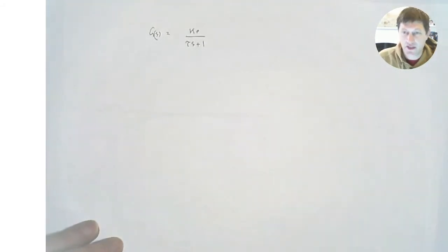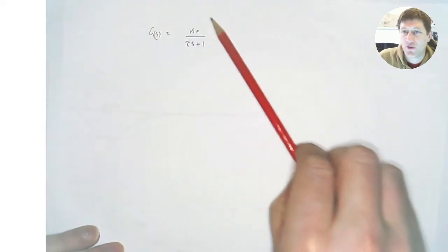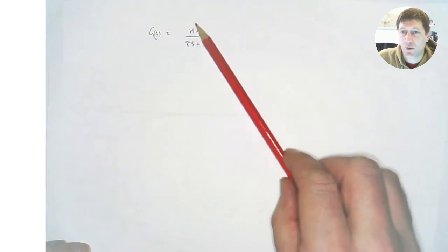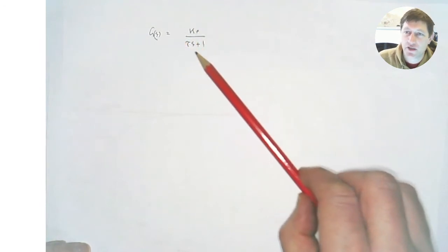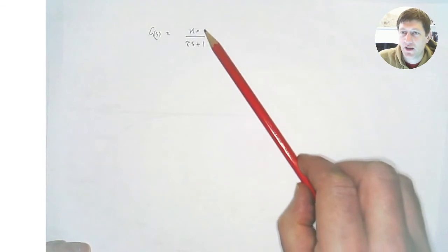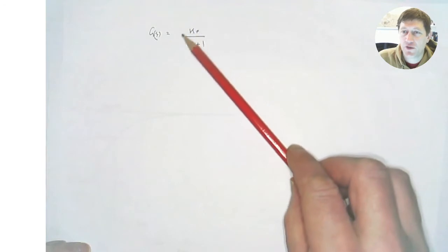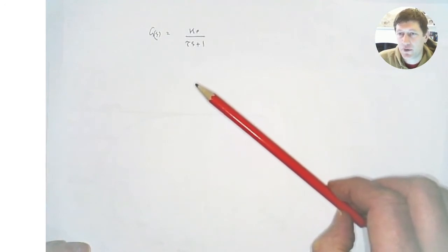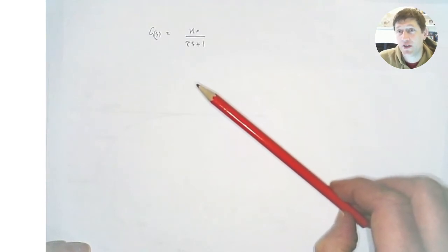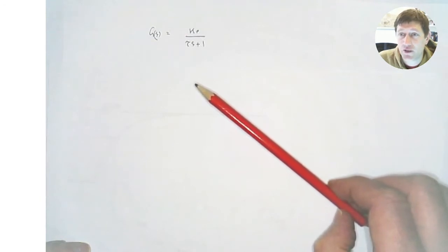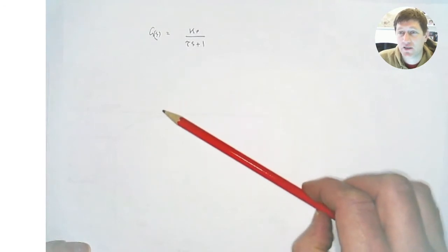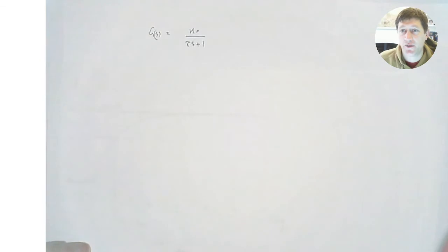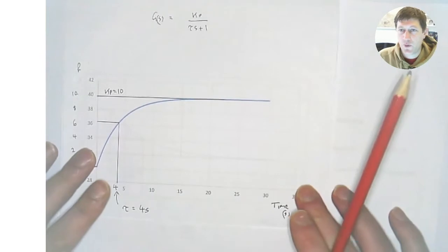We reviewed the technique of characterising a system with a general equation. Many first order systems can be characterised with Kp over (tau s + 1). The characteristics are the same no matter what your system is — you find what Kp and tau equal for that system. Kp is the steady state gain: for a unit step change in the input, the steady state output change will be Kp times the magnitude of the input change. Tau is the process time constant, telling us how long it takes to approach the new steady state — in one time constant tau, the response reaches about 63% of the new steady state value.